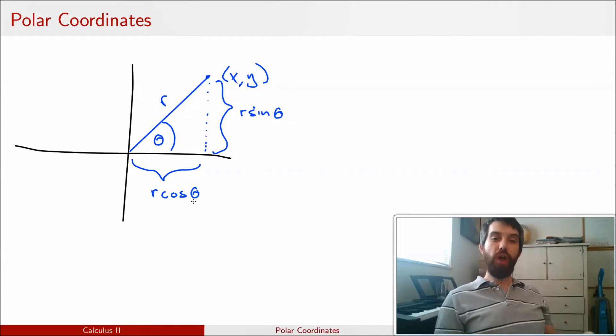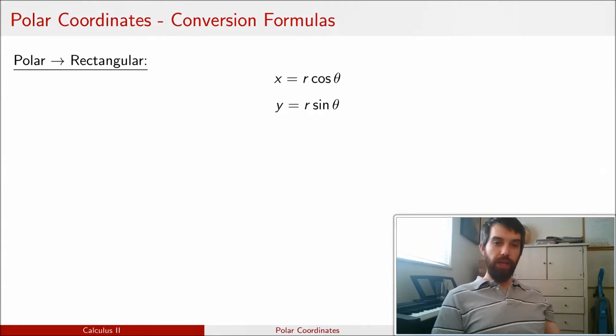So, this little bit of trigonometry allows me to relate my Cartesian, or my rectangular coordinates, with my polar coordinates. In particular, the X is going to be equal to R cosine of theta, and the Y is equal to R sine of theta.